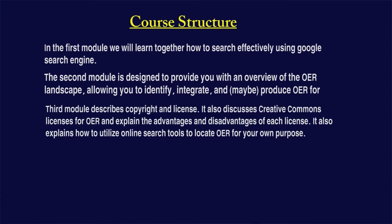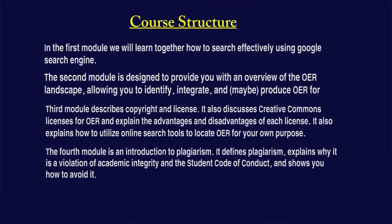The third module describes copyright and licenses. It also discusses creative commons licenses for OER and explains the advantages and disadvantages of each license. It also explains how to utilize online search tools to locate OER for your own purpose. The fourth module is an introduction to plagiarism. It defines plagiarism, explains why it is a violation of academic integrity and the student code of conduct, and shows you how to avoid it.